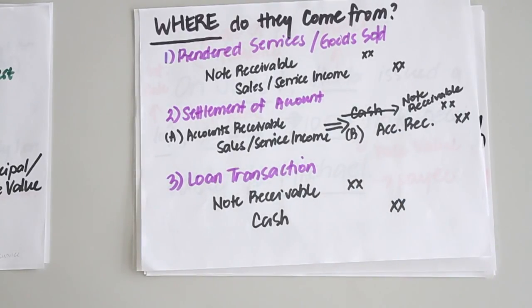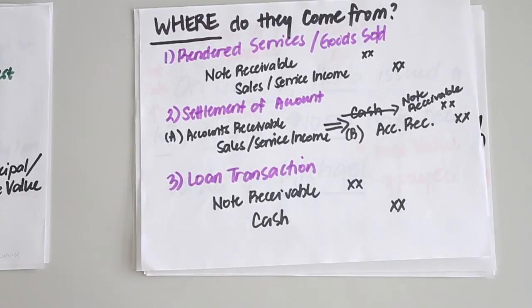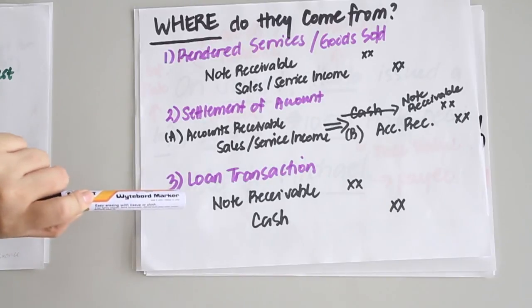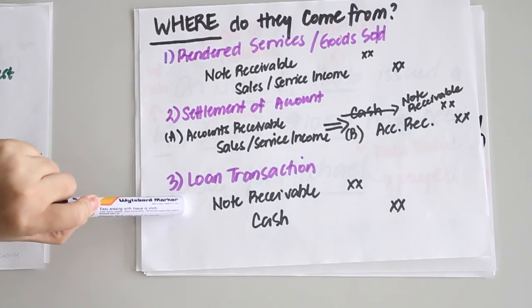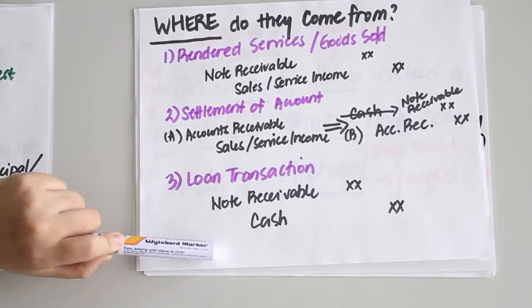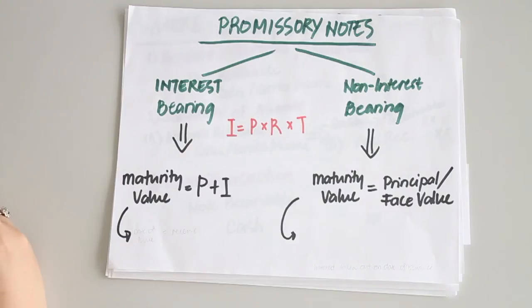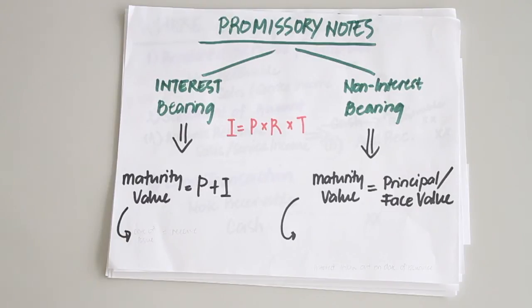The third source is from a loan transaction, where one receives a note receivable in return for cash given to a debtor. This is journalized by debiting notes receivable and crediting cash. As mentioned, promissory notes can either be interest bearing or non-interest bearing.